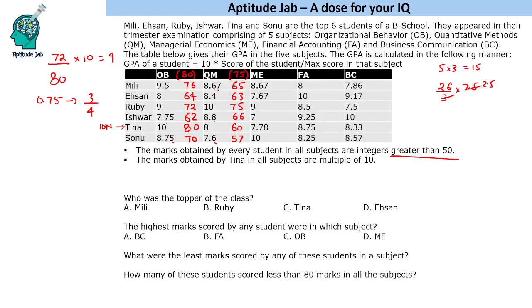For ME, the decimals 0.67 and 0.78 indicate a multiple of 9. Taking the maximum as 90: 7.78 × 9 = 70, which is a multiple of 10 — perfect. Then 8 × 9 = 72, 7 × 9 = 63 + 6 = 69, 9 × 9 = 81, and 7 × 9 = 63. ME values are filled with maximum marks of 90.